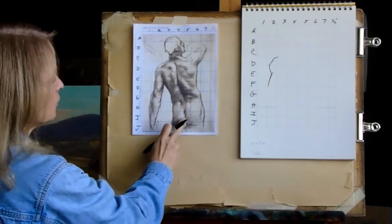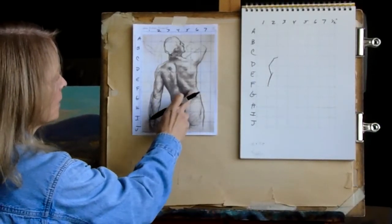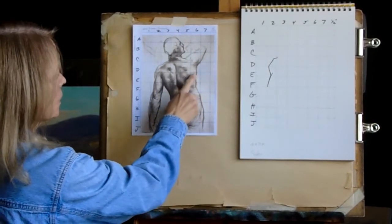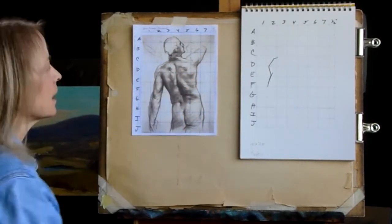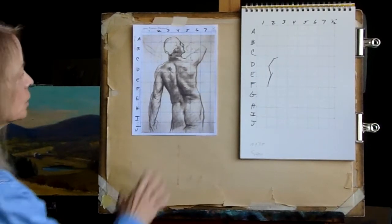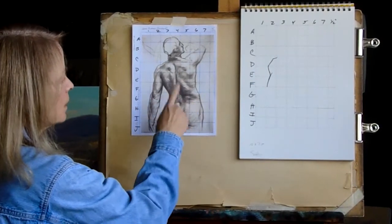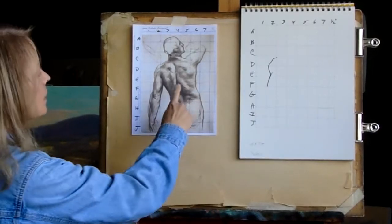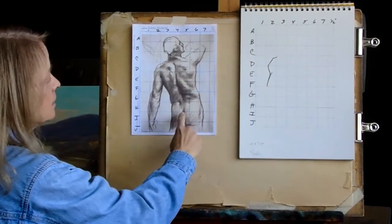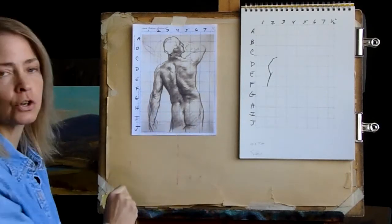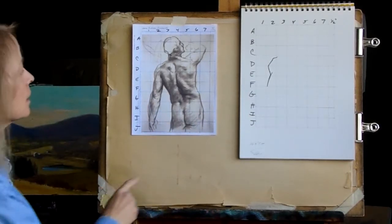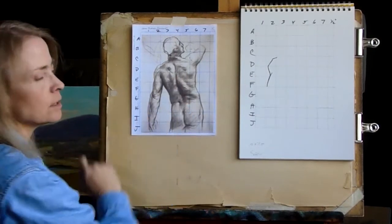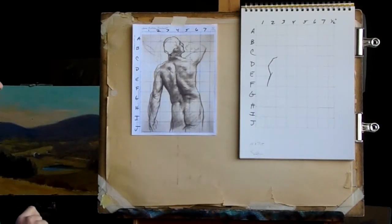Then you are going to go in and define these shadow patterns. We talked about this in class. Once you define those shapes, then you can start with value four and five. Start with four to lay it in, and then five to add your shadow edges, and what's called the core shadow, some of the darker interior parts.